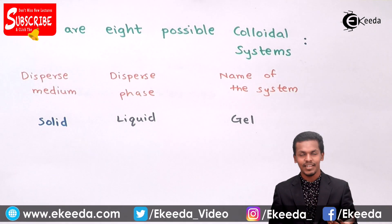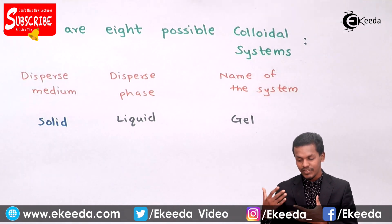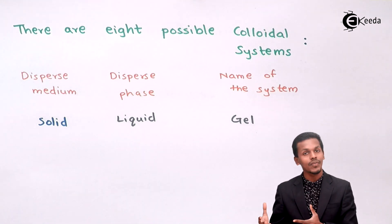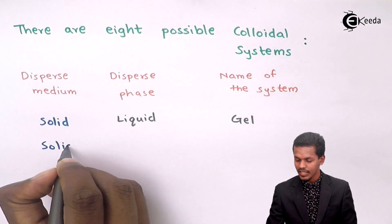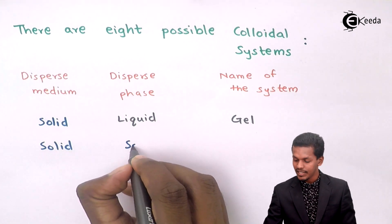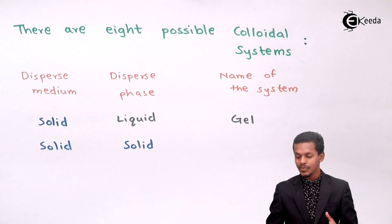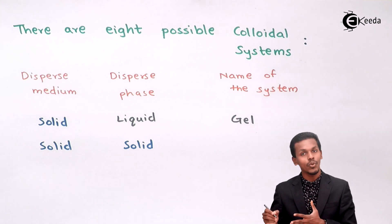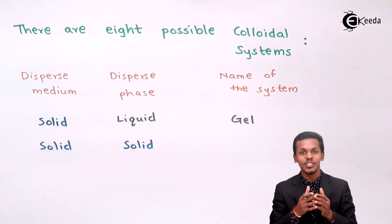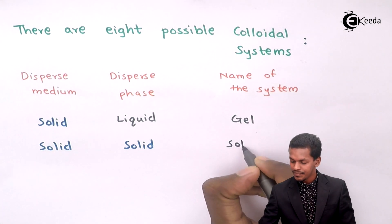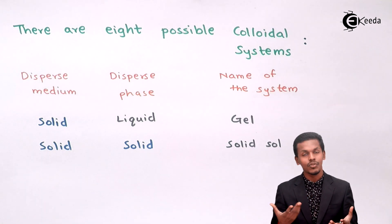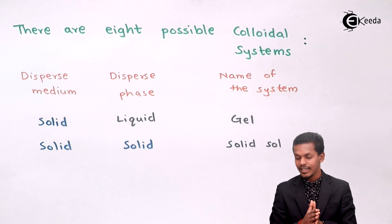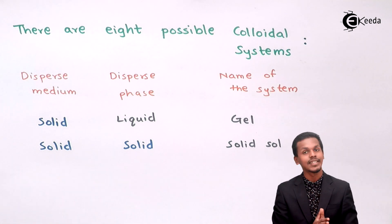Examples of Gel include hair gel and face wash used daily, as well as cheese and butter — all have liquid as the dispersed phase and solid as the dispersion medium. Another colloidal system is Solid Sol, where solid is the dispersion medium and solid is also the dispersed phase. Examples include ruby glass and gold in glass, since both gold and glass are solid.